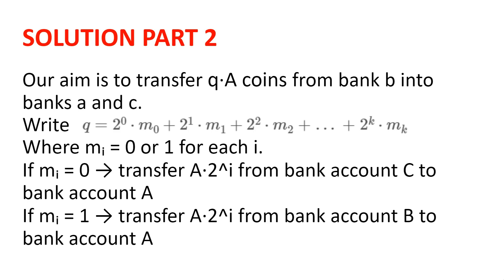So we are just left to ensure that the algorithm is allowed — i.e., when we transfer money into bank account A, the balance doubles — and that we have the money in bank accounts B and C to do so. Clearly, the contents in bank account A will always double, as on the i-th move, we transfer A times 2 to the power of i coins into it, whereas previously it contained A times (1 plus 1 plus 2 to the 1 plus 2 to the 2 plus all the way to 2 to the i minus 1) coins, which is equal to A times 2 to the i coins.